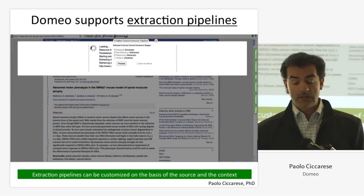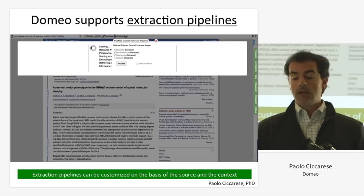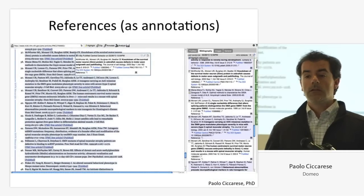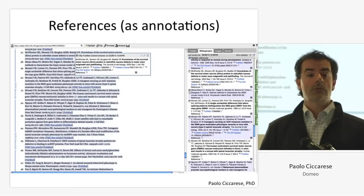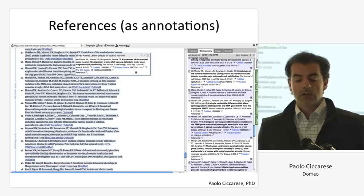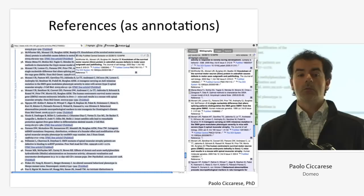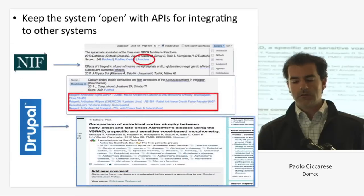Another thing DOMEO does: it reacts to things. If you open a PubMed article, it can automatically run extraction pipelines. Some are simple, like references extraction — we retrieve metadata from PubMed and annotate the article with structured references that you can use for other purposes. You can also run text mining on sections like methods and materials right away when you open the article, so you immediately have a sense of what the article is about.